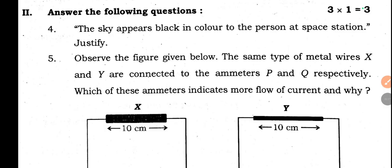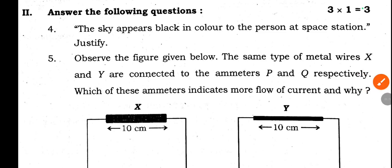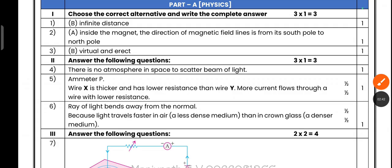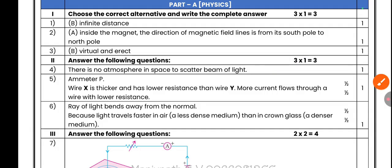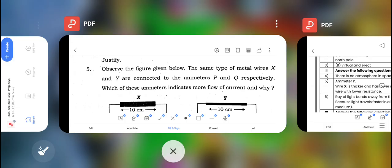Question number 2: Answer the following questions, each carrying one mark, total three questions for three marks. The sky appears black in color to the person at a space station. Justify. The answer: There is no atmosphere in space to scatter a beam of light. That's why the sky looks dark in space.